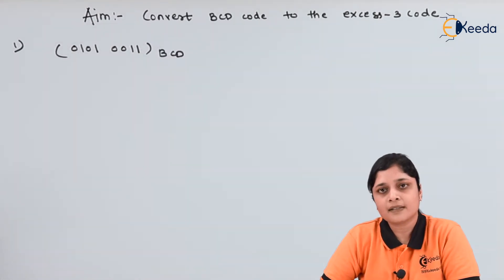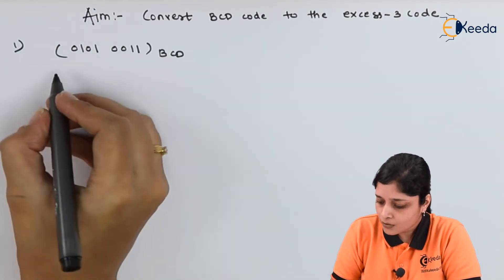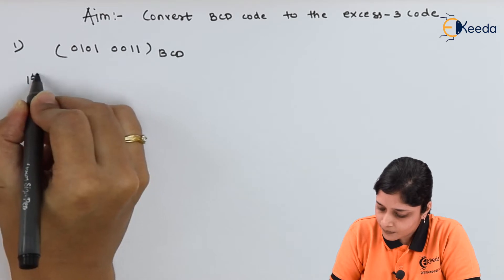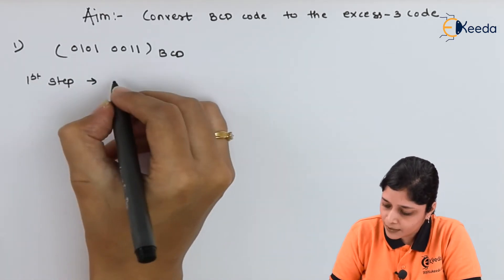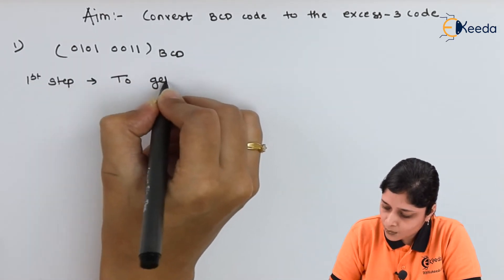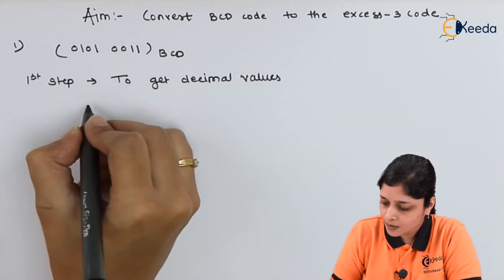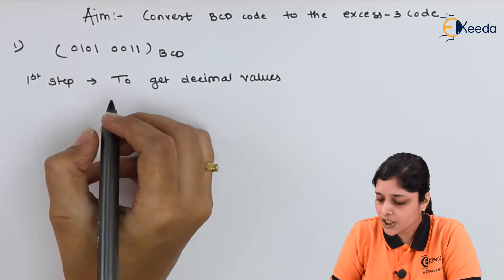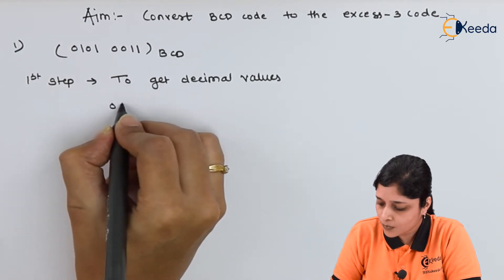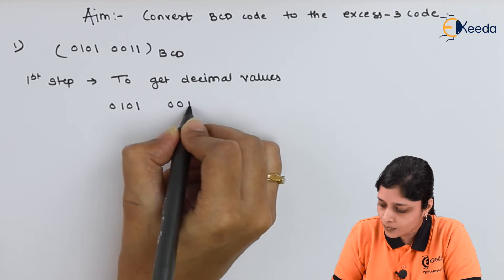Now for getting XS3 code, you should require its decimal. So first step, write down its decimal values to get decimal values.